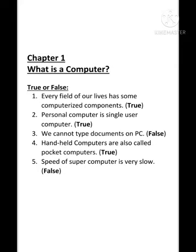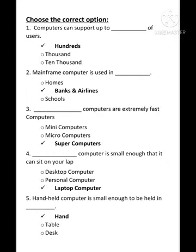Now we come to Choose the Correct Option. Three options are given and we have to identify the correct one. First statement: many computers can support up to blank users. The options are 100,000 or 10,000, and the correct one is 100,000. Many computers can support up to 100,000 users.